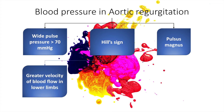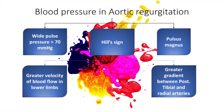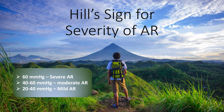Hill sign is because of greater velocity of blood flow in the lower limbs and a greater gradient between the posterior tibial and the radial arteries. Hill sign is used for the severity of aortic regurgitation. A gradient between the posterior tibial and the radial artery of more than 60 millimeters of mercury indicates severe AR, a gradient of 40 to 60 indicates moderate AR, and a gradient of 20 to 40 millimeters of mercury indicates mild AR.